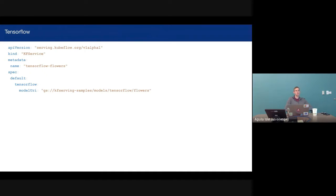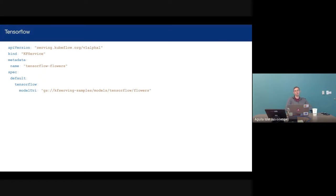This is what our resource looks like. The most minimal one is pretty simple. There's a little bit of Kubernetes boilerplate, which is necessary. Our spec is really just a default configuration — we're not providing a canary here. We've elected to choose the TensorFlow option, and within that, the only required field is a model URI. We're hosting this out of GCS. That model happens to be public, so there's no real auth necessary. By default, if your cloud has access via auth scopes or whatever mechanism you're using, we'll just download straight from whatever that path is.